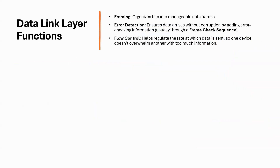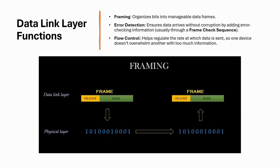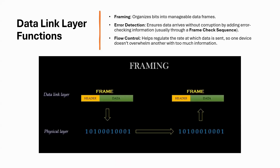One of the main jobs of Layer 2 is framing. This means that the Data Link Layer takes raw bits from the physical layer and organizes them into frames — chunks of data that can be transmitted over a network.